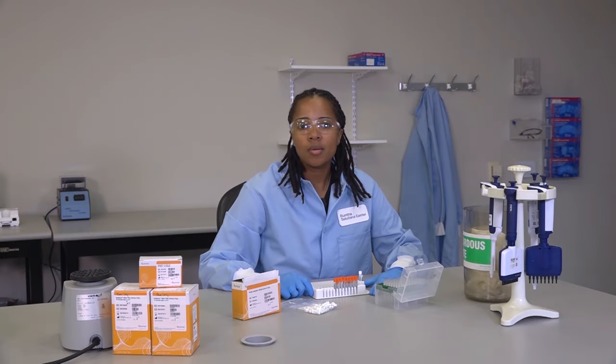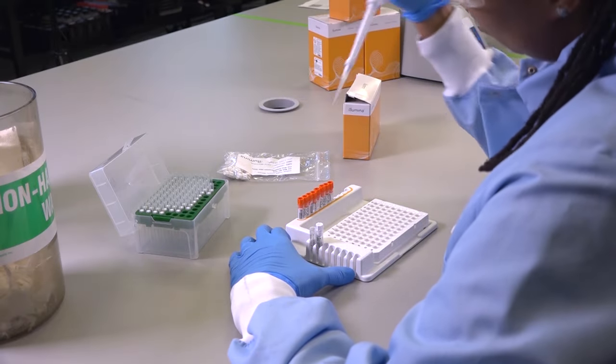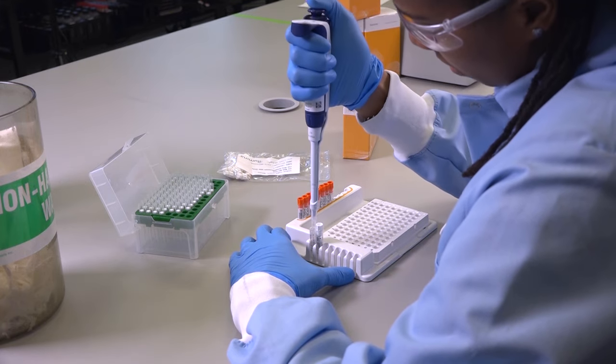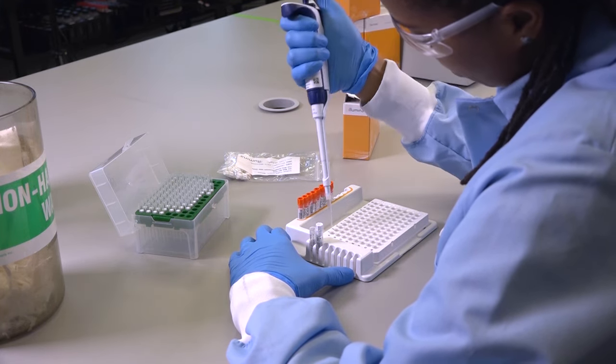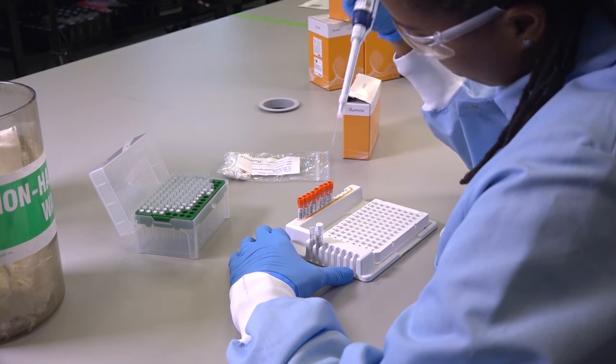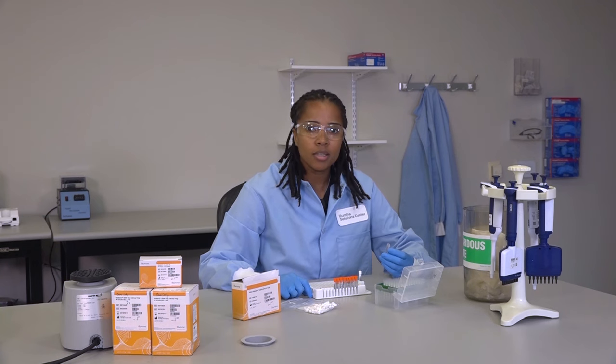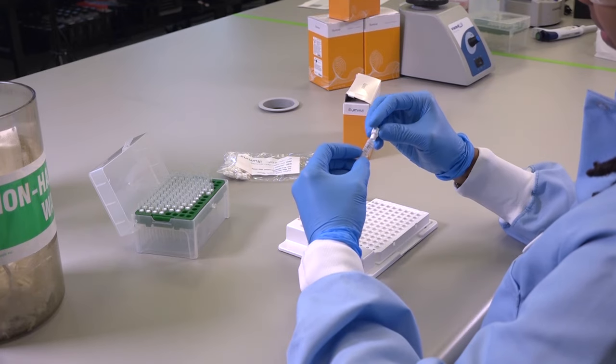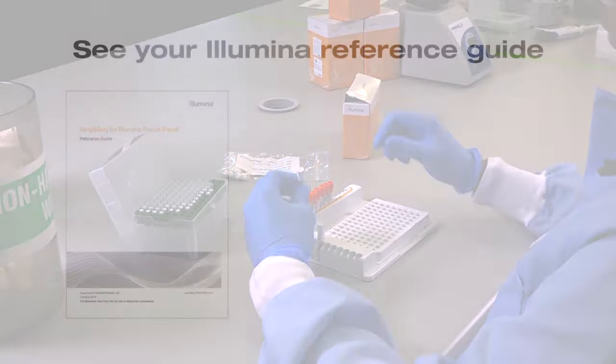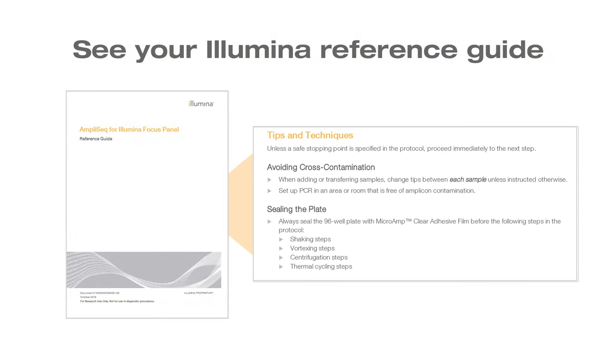When working with Illumina library preparation kits, be sure to change tips between each sample when adding or transferring samples or reagent master mixes. Change tips between each row and column when adding index adapters. Remove unused index adapter tubes from the working area. Open only one index adapter tube at a time to prevent misplacing caps. Use a fresh new cap to reseal the index adapter tubes. Follow best practices listed in the Illumina reference guide for your application.